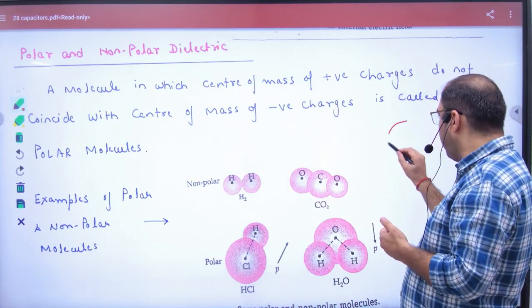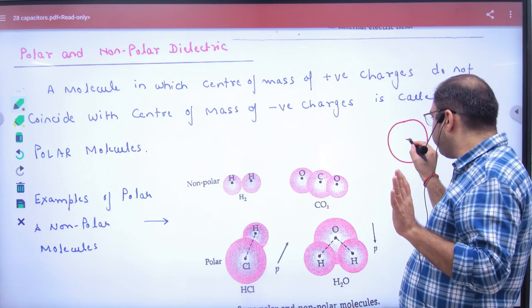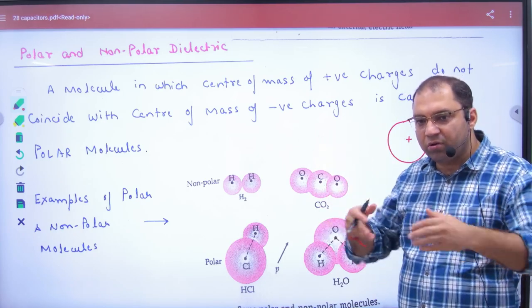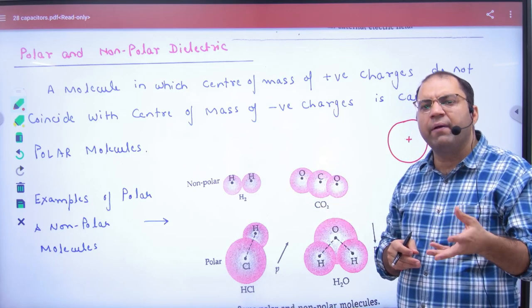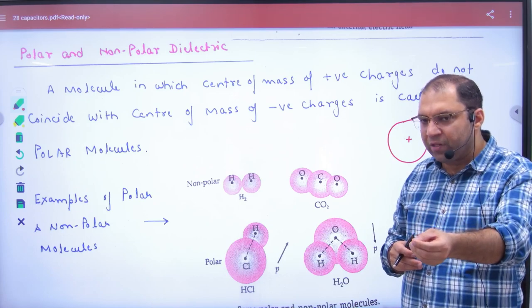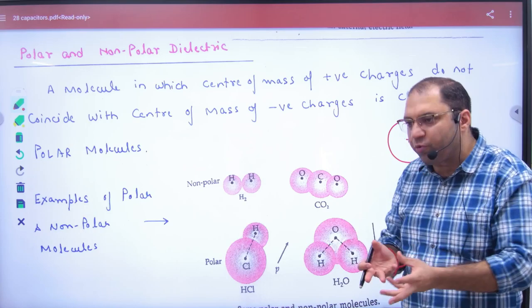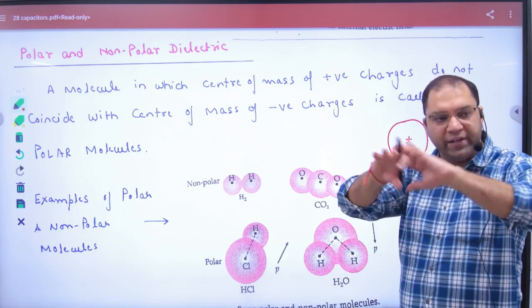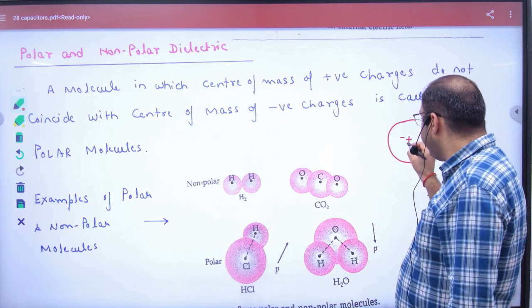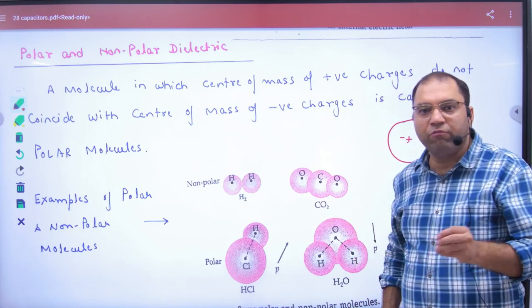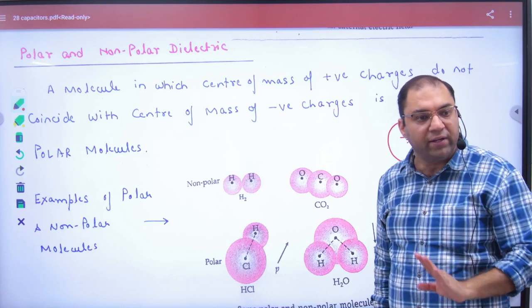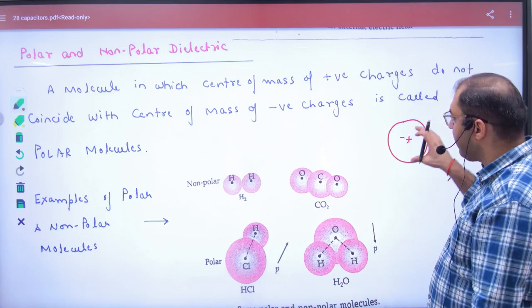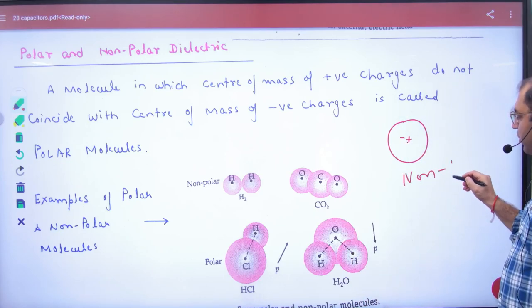Now in any atom, there will be a positive charge within the nucleus and it will be surrounded by negative charges. Imagine that the negative charge has a center point where the whole negative charge is concentrated, like the nucleus for positive charge. So the common point of positive and negative charges coincide. Center of positive and center of negative coincide. This type of atom is non-polar.